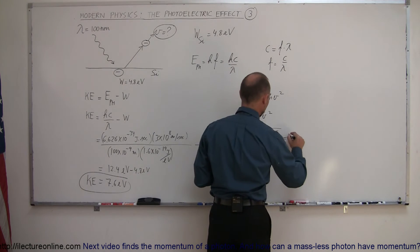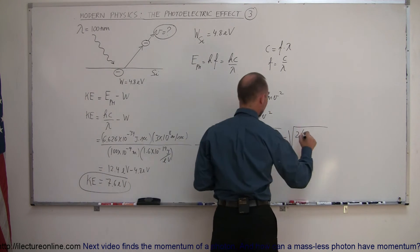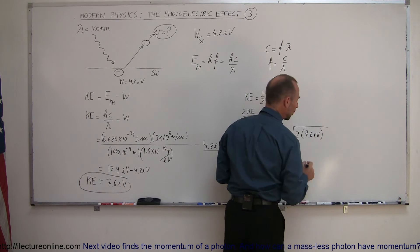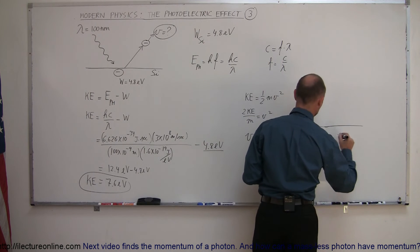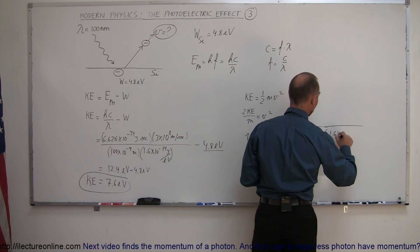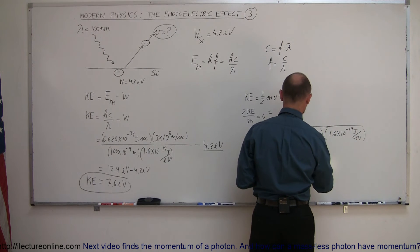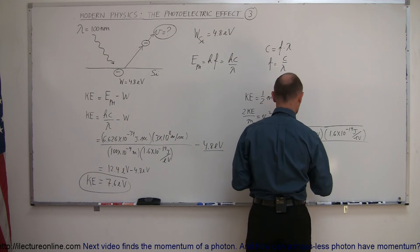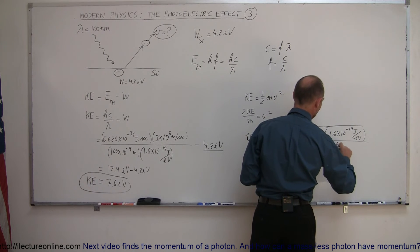Plug in the numbers here. That's the square root of two times the kinetic energy of 7.6 electron volts. Of course, if we want to find velocity, we'll have to convert that to joules. So here's our conversion. So 1.6 times 10 to the minus 19 joules per electron volt. And take the whole thing divided by the mass of the electron, which is 9.11 times 10 to the minus 31 kilograms.